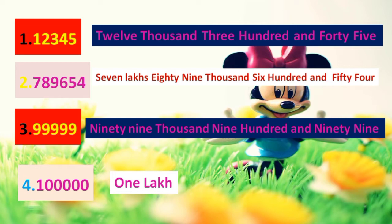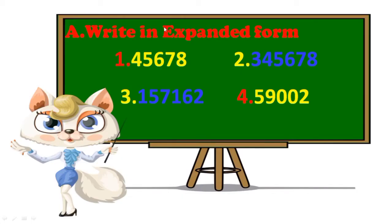Let's go to the next activity: write in expanded form. Now here there are four problems. The first one: ones, tens, hundreds, thousands, ten thousands — the number is forty-five thousand, six hundred and seventy-eight. The second one is three lakhs, forty-five thousand, six hundred and seventy-eight. The third one is one lakh, fifty-seven thousand, one hundred and sixty-two. The fourth one is fifty-nine thousand, two.